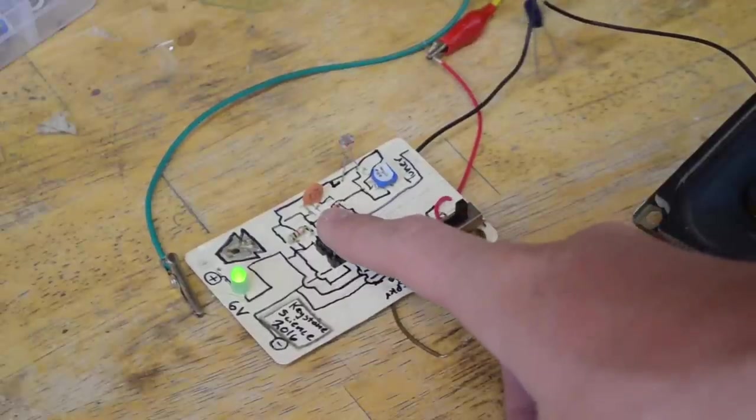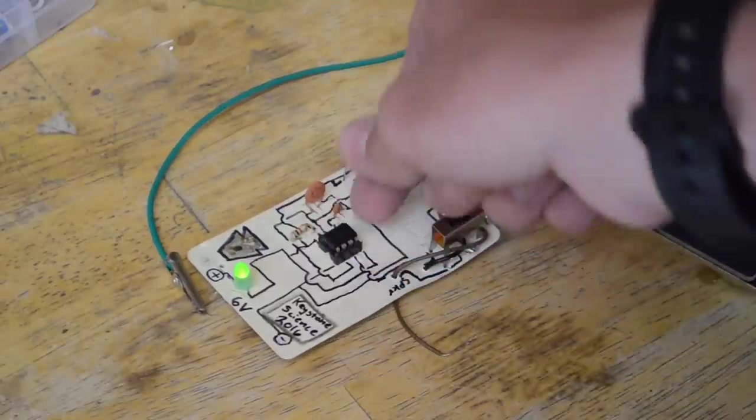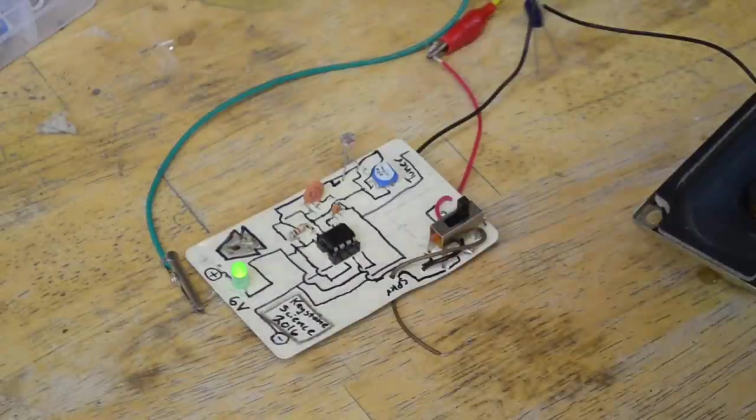I ordered out a few eight pin sockets to put the 555 timer chip in. That way, if it does burn out from someone putting in too much voltage, it'll be really easy to replace because I can just pop it out and place a new one in without having to desolder anything.